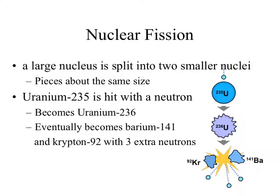First, we want to talk about nuclear fission. Simply put, when the nucleus splits into two smaller nuclei, that is nuclear fission. The fission we've focused on is the fission of uranium-235, which was used in one of the atomic bombs in World War II. It starts with one neutron hitting a uranium-235 isotope. Uranium-238 is the most abundant isotope — 99.3% of all uranium is uranium-238, meaning less than 1% is uranium-235. It takes a lot of energy to separate uranium-235 from uranium-238.